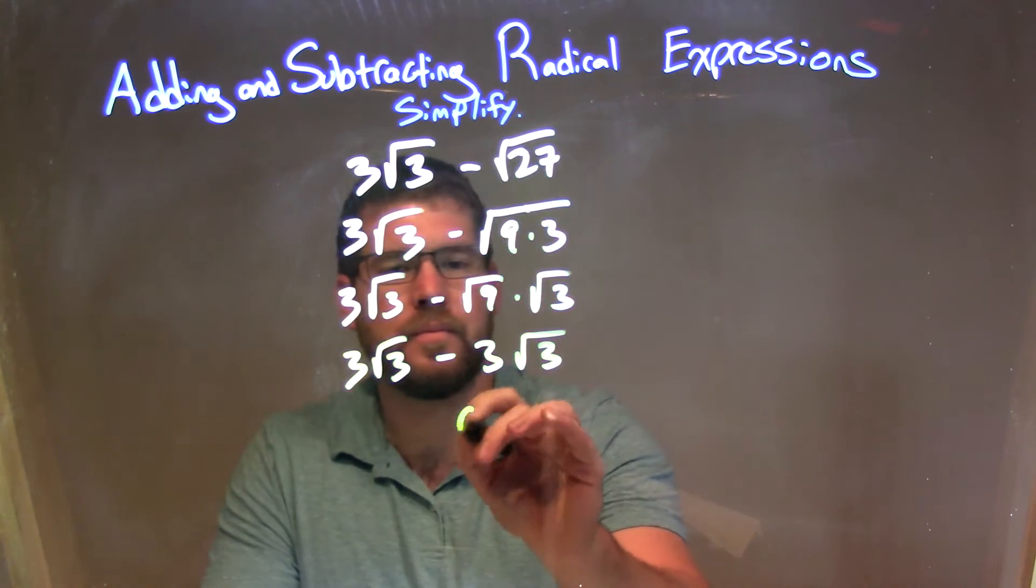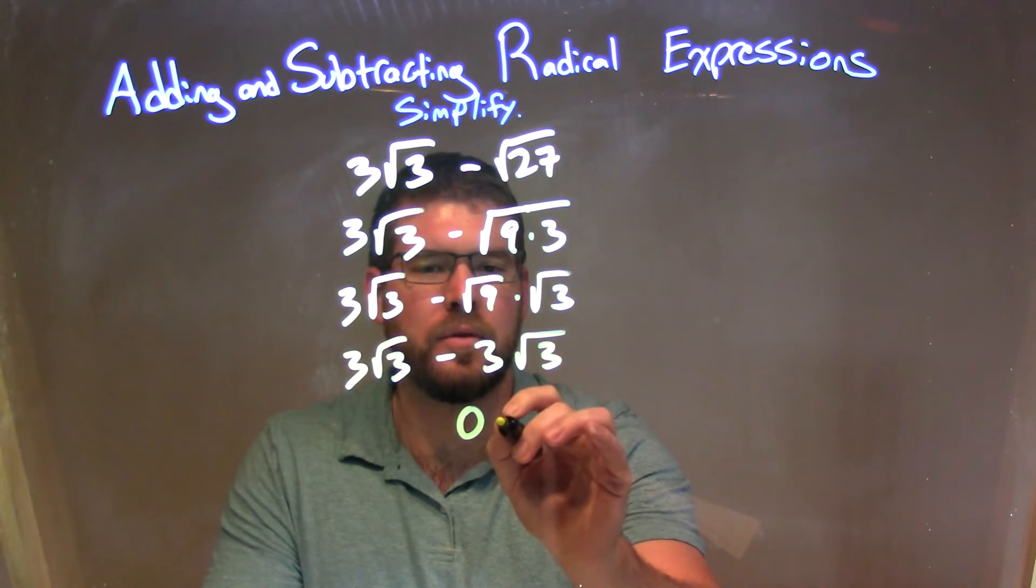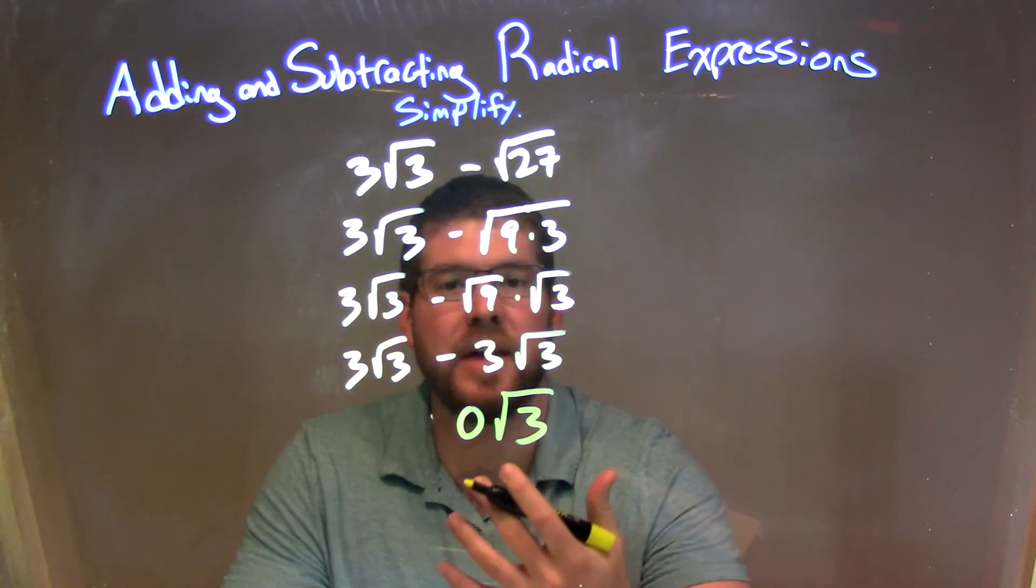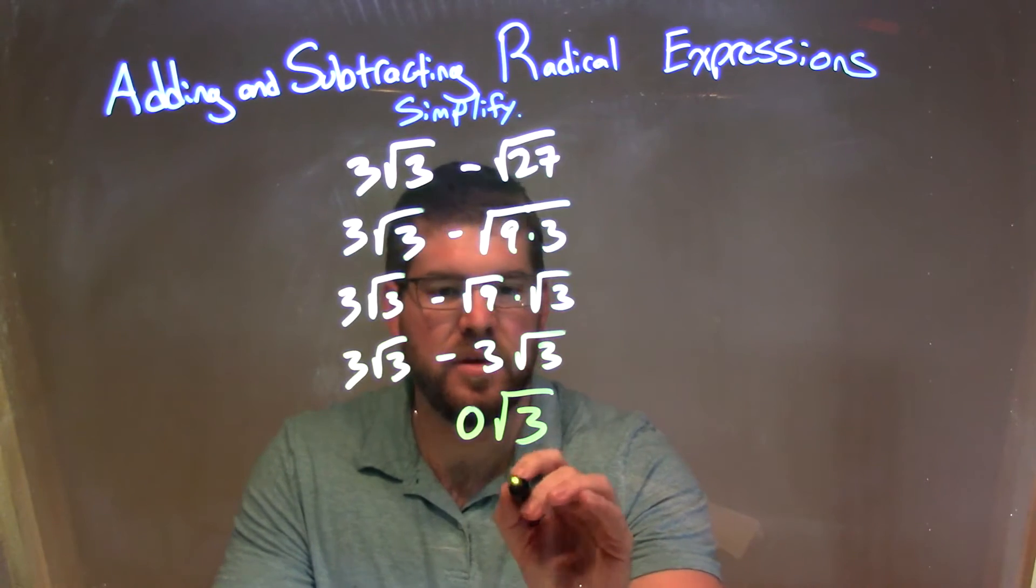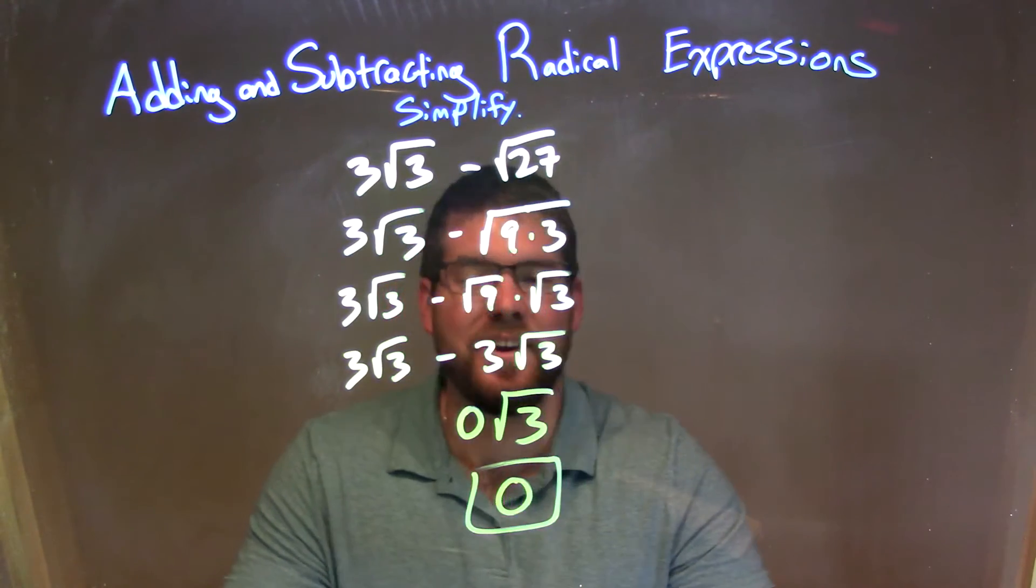3 minus 3 is just 0. And we bring down the square root of 3, so we have 0 times the square root of 3. Well, what's 0 times anything? Just 0. So our final answer here is just 0.